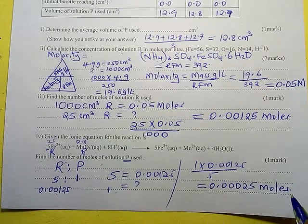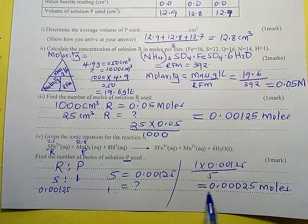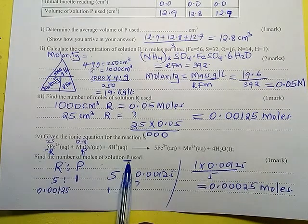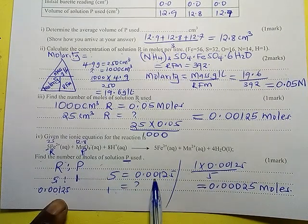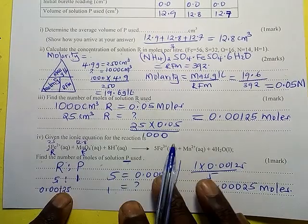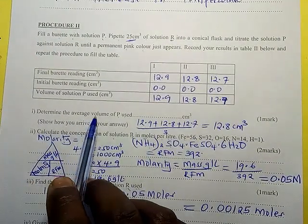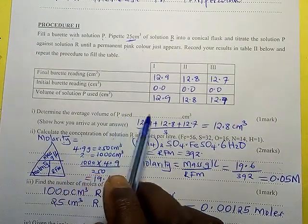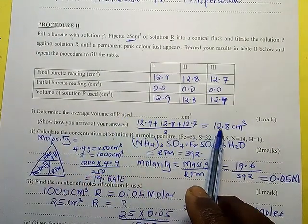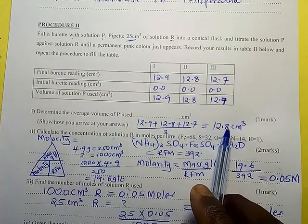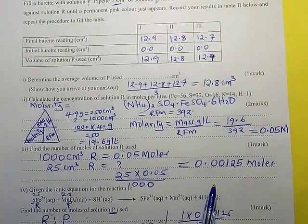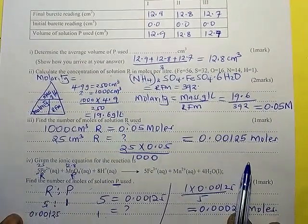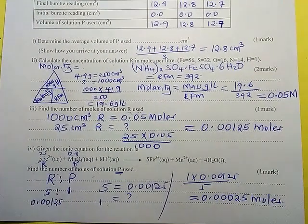That gives 0.00025 moles of P. The volume of P that was used — going back to determine the average volume of P — is 12.8 cm³. That is the volume of P.